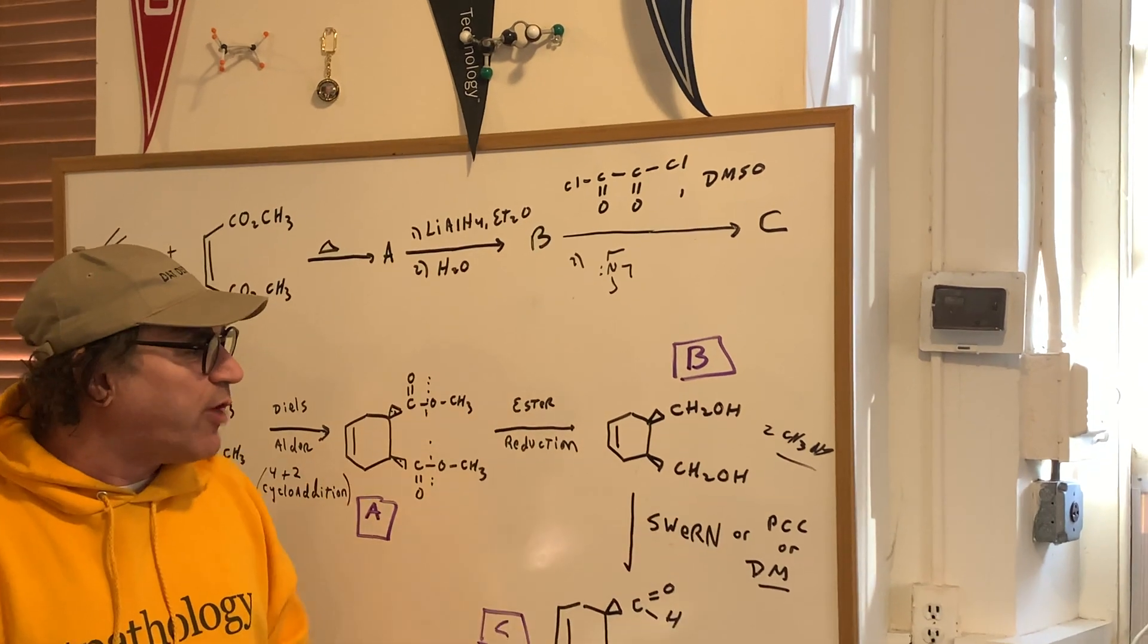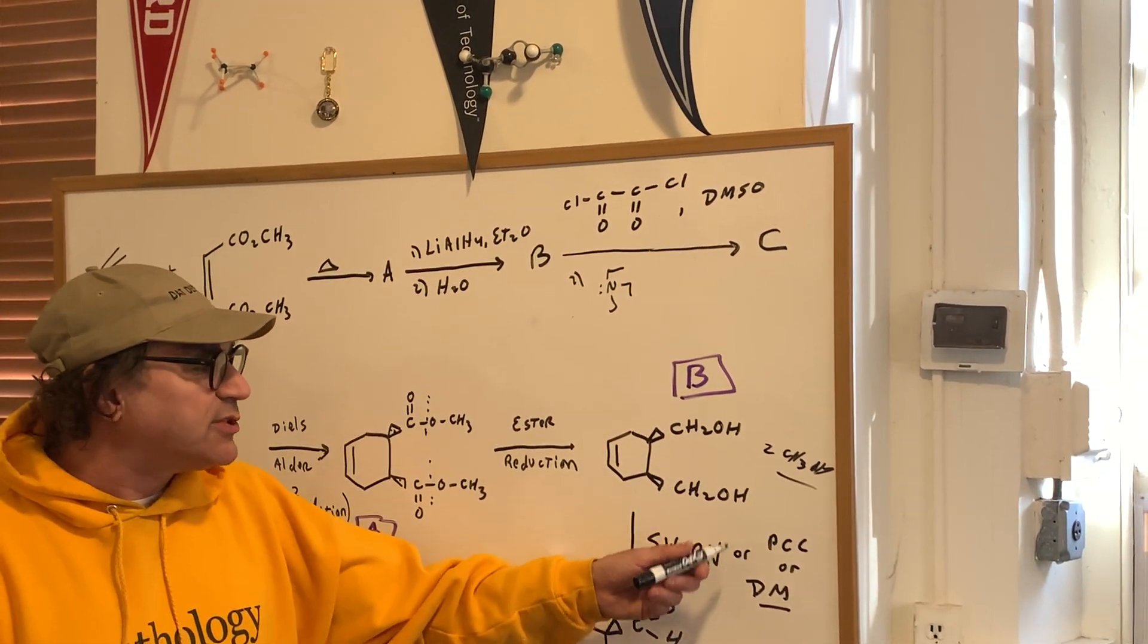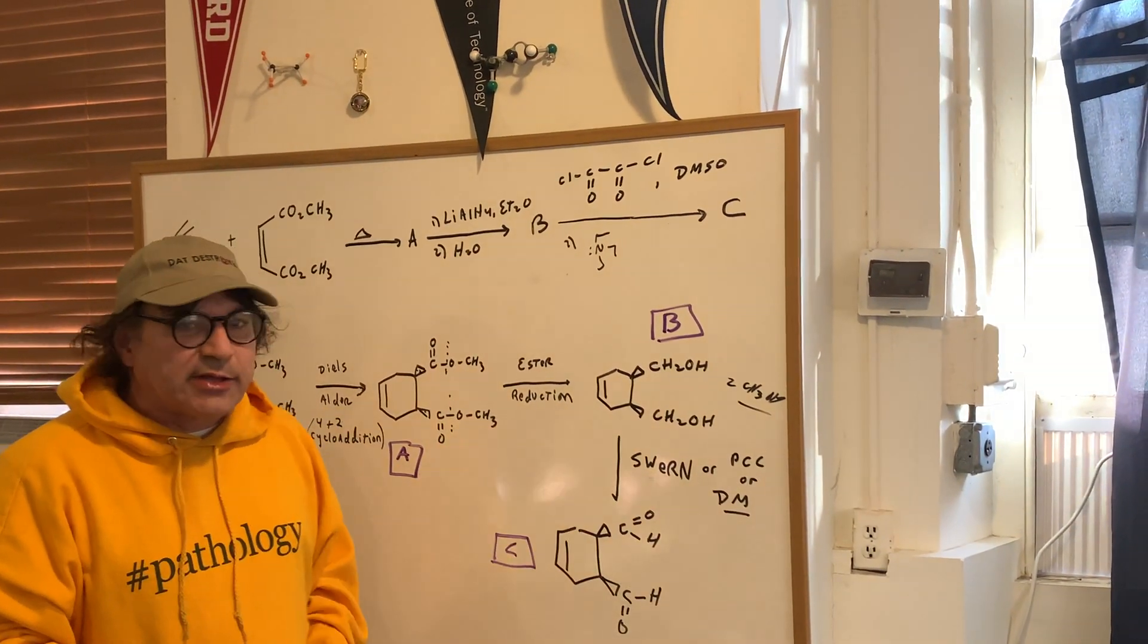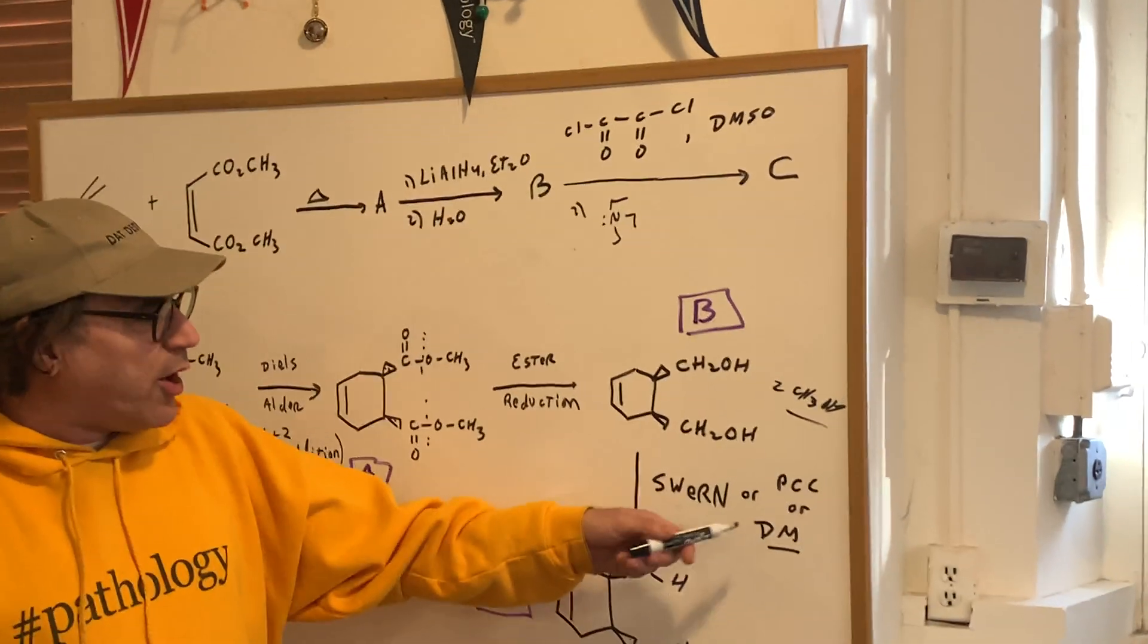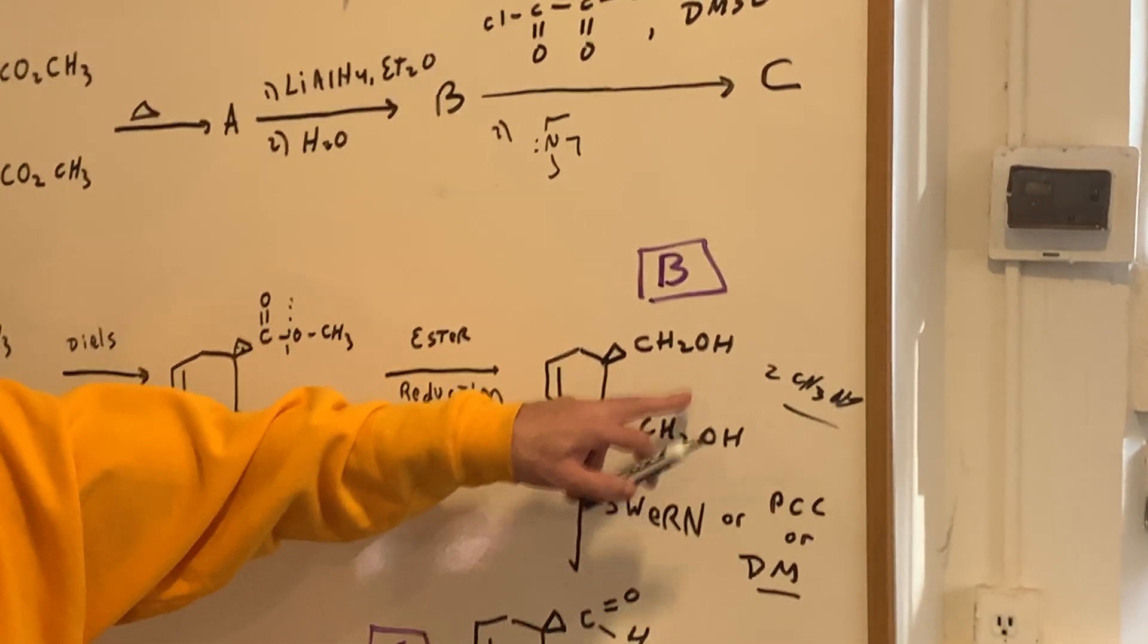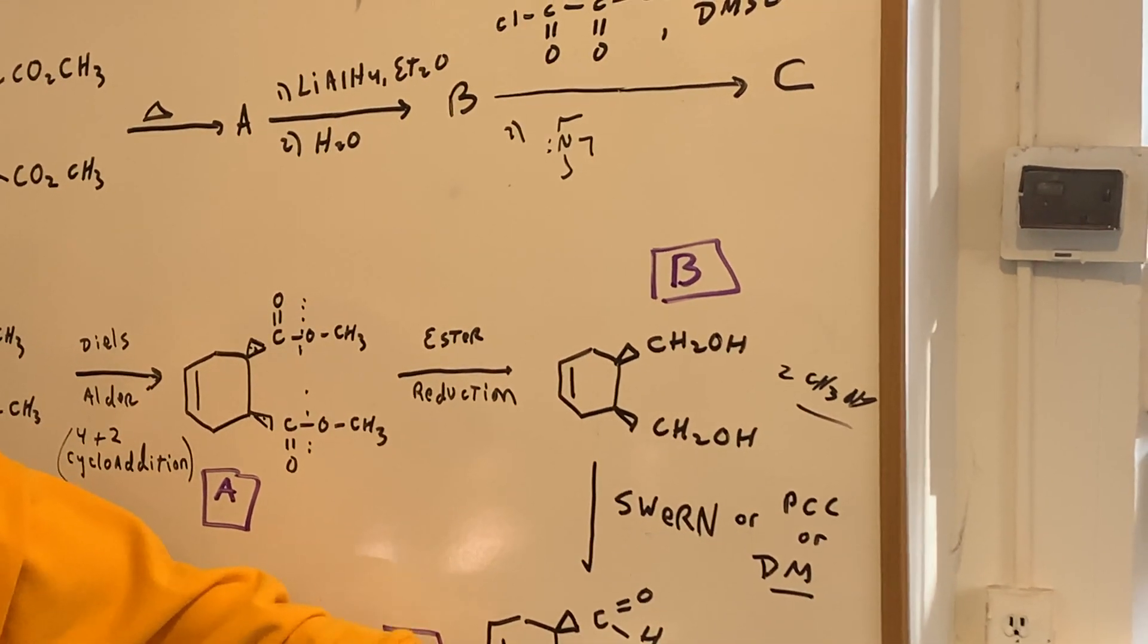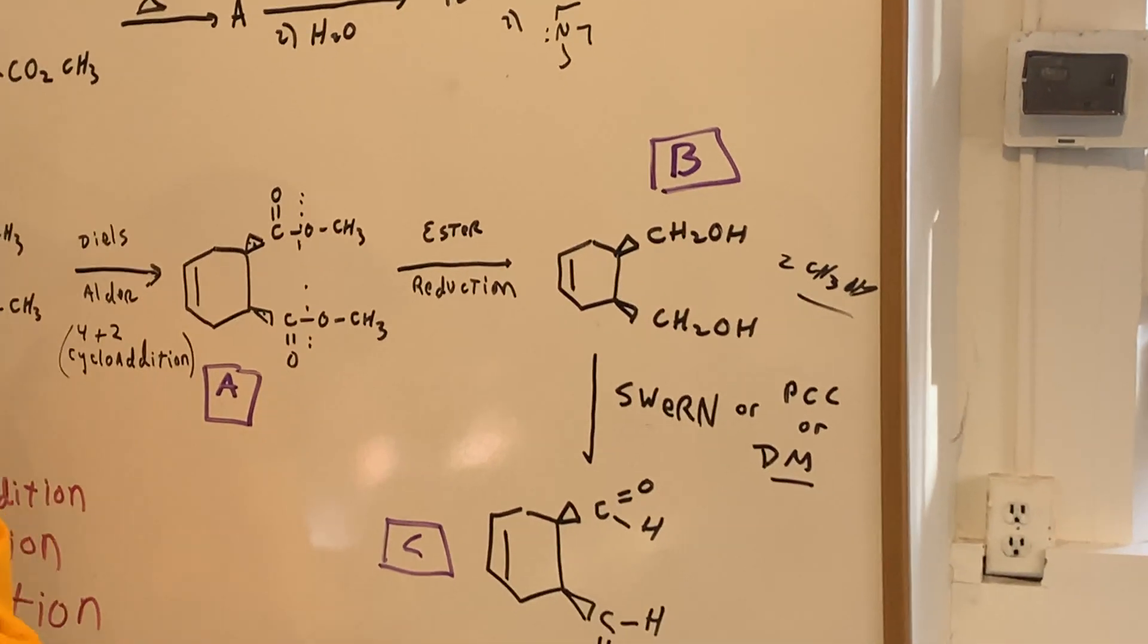Swern oxidation is a little more gentler than PCC, but it'll do the same thing. What we call the Desmartin reagent. So Swern, PCC, or Desmartin is going to take the alcohol group, the primary alcohol, and get me my two aldehydes.